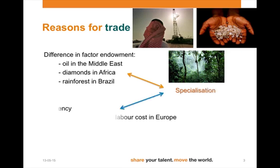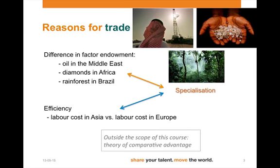Another reason for trade is efficiency. If we look at the labor costs in Asia and compare that to the labor costs in Europe, we'll find efficiency possibilities. Again, this could lead to specialization. The economic theory of comparative advantage lies at the heart of an explanation of international trade. It is outside the scope of this course, but if you want to further explore international trade, you're strongly advised to have a look at this theory.